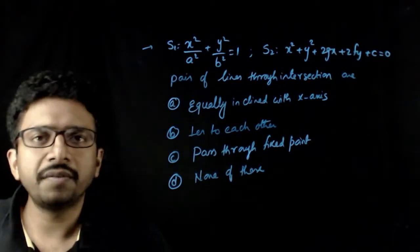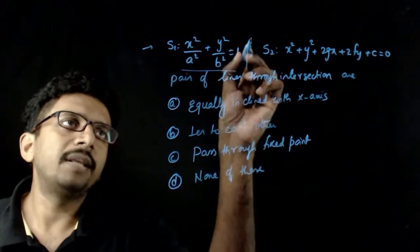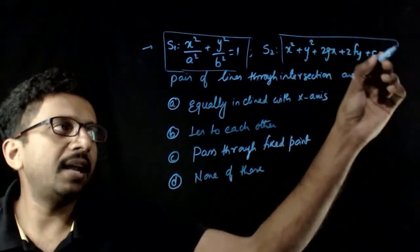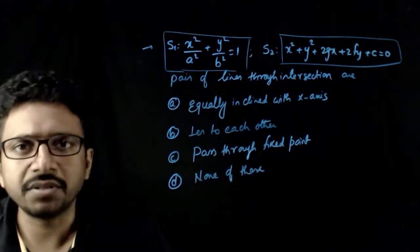Welcome students. In this question, you have given that you have an ellipse x square by a square plus y square by b square is equal to 1, and you have a circle x square plus y square plus 2 g x plus 2 f y plus c is equal to 0.